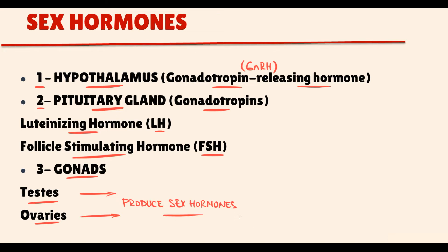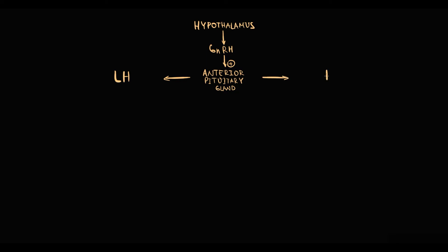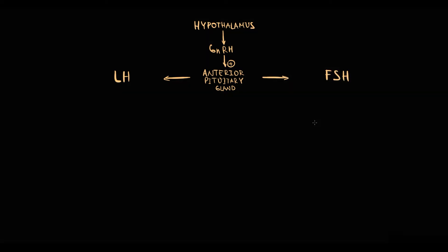Now we can discuss this process step by step. Initially, the hypothalamus secretes gonadotropin-releasing hormone, which stimulates the pituitary gland to secrete gonadotropins — luteinizing hormone and follicle-stimulating hormone. These two hormones enter the bloodstream where they stimulate the gonads: in males they act on the testes, and in females they act on the ovaries.